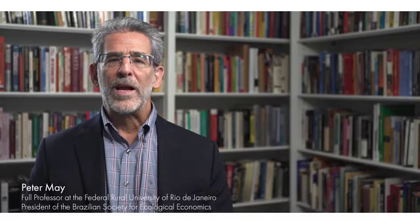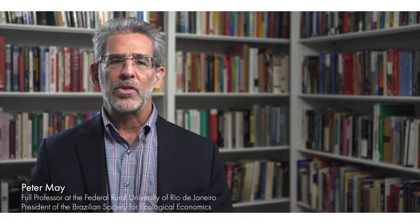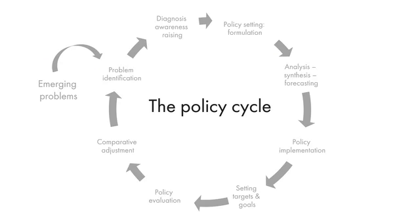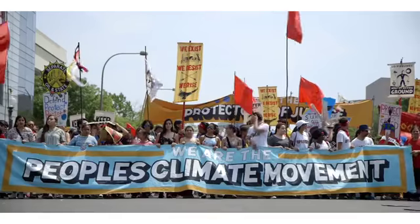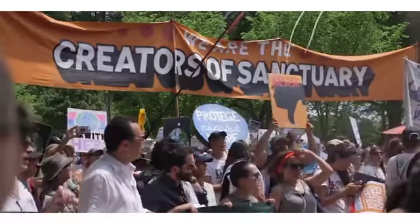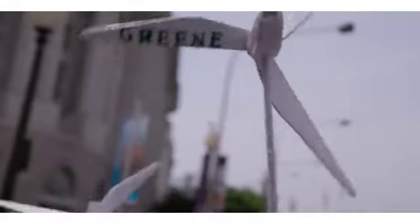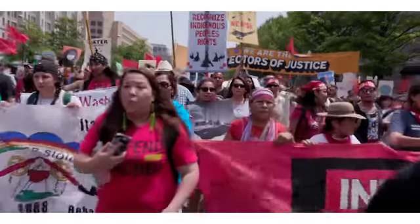Today we're going to talk about the evaluation of projects and programs from a perspective of the project cycle and the policy cycle, in which we can see that there's kind of a circular reasoning behind this. We have problems in society that emerge, and we have groups in society that can identify those things as problems. These can be governors or society itself putting pressure on government to make policy that responds to the problems that have been identified.